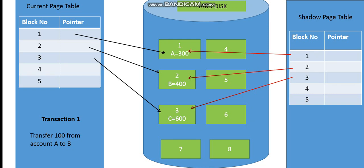The hard disk contains blocks, and these blocks consist of data records. The current page table contains block numbers and pointers to those blocks present in the hard disk. A pointer is basically an address — it holds the address of the blocks present in the hard disk.